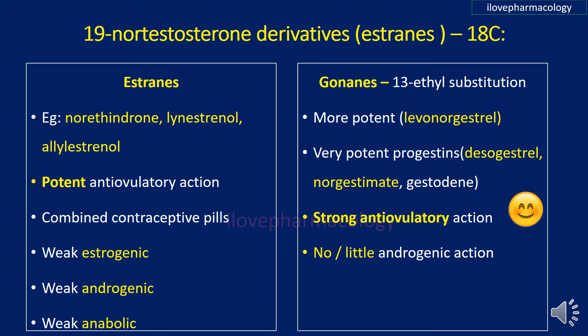Gonans are estrans with a 13-ethyl substitution. Previously, levonorgestrel was the most potent gonan. Recent drugs include desogestrel, norgestimate, and gestodene, which are very potent progestins. Desogestrel and norgestimate are prodrugs. Gonans have stronger anti-ovulatory action. Importantly, unlike estrans which have weak androgenic action, gonans have no or little androgenic action.